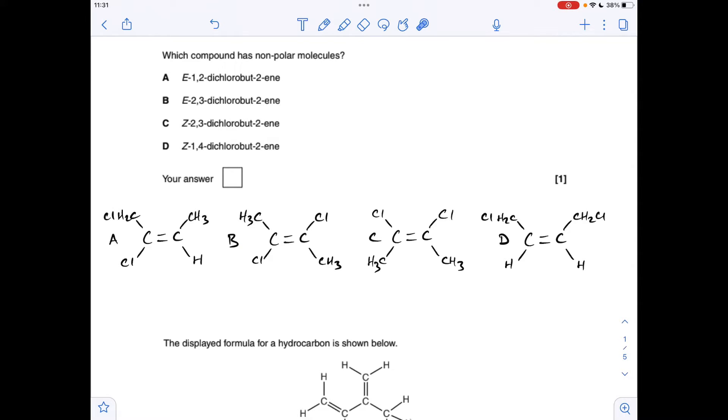Now we've switched the chlorines to carbons 2 and 3, but they need to be on opposite sides to make it the E isomer. You can see hopefully that this is symmetrical, so this is actually the answer. This will be a non-polar molecule because there won't be an overall dipole on it.